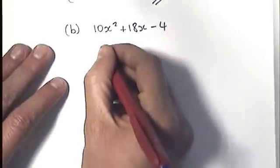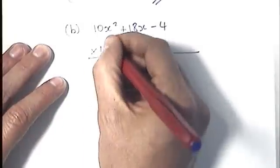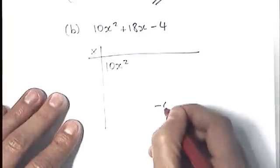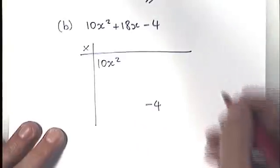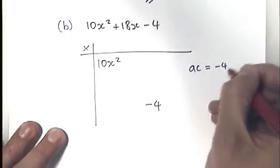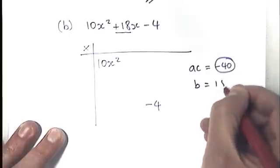OK, so the first thing to do is to put a multiplication grid. Put this first term, top left corner, last term in the bottom right corner. And then we're going to write down our values of AC. A times C is minus 40, and our value of B is 18.